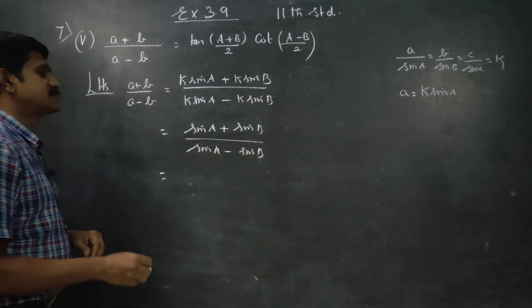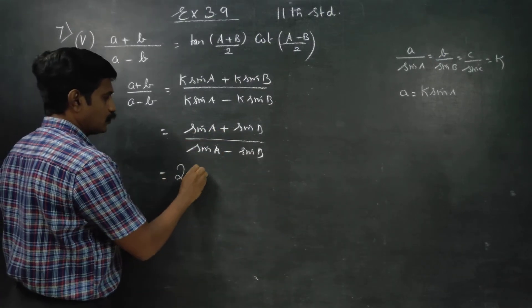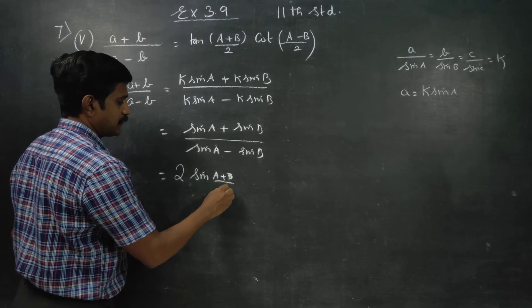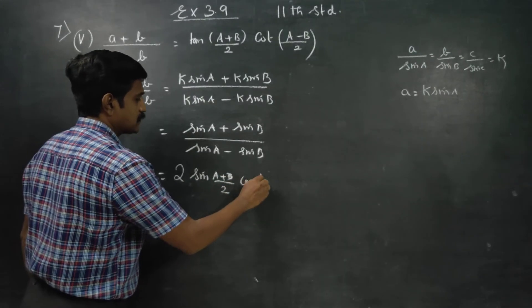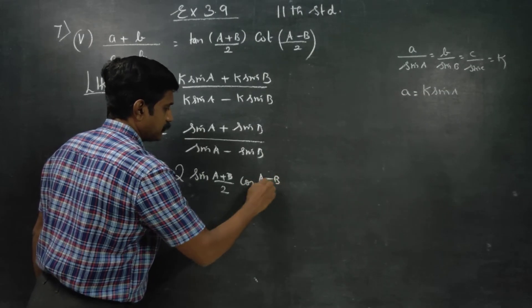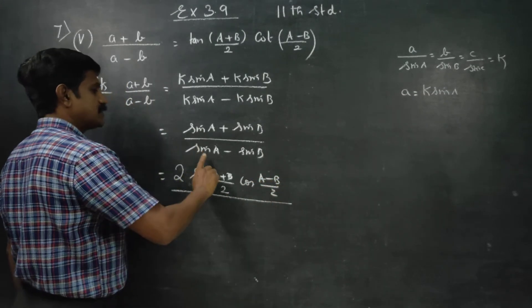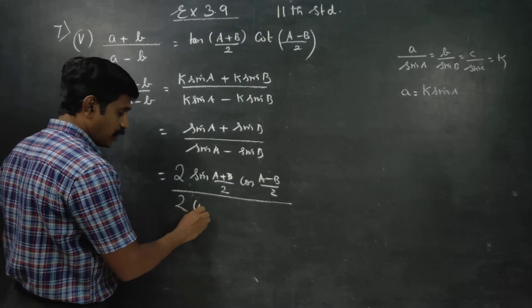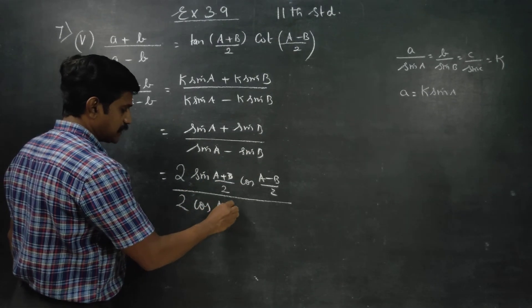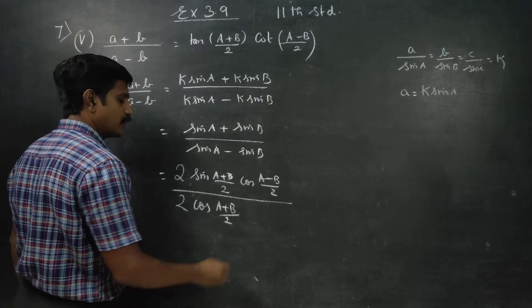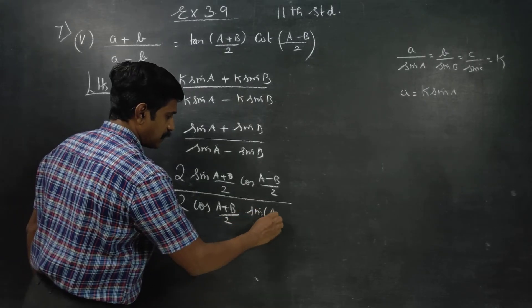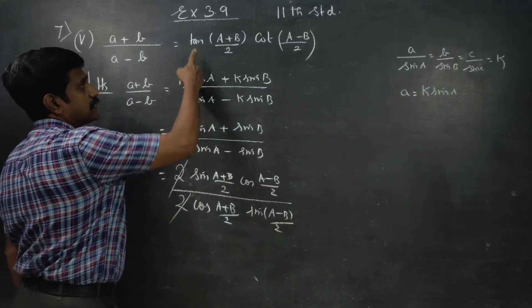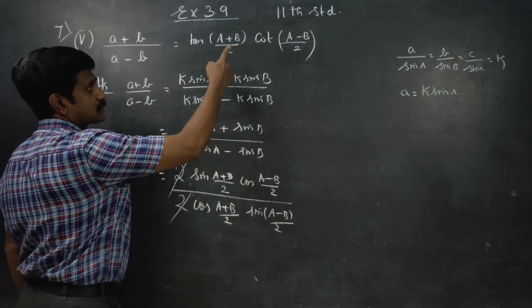What is sin C + sin D formula? 2 sin((C+D)/2) cos((C-D)/2). What is sin C - sin D formula? 2 cos((A+B)/2) sin((A-B)/2). The 2's cancel. sin/cos is tan, cos/sin is cot.